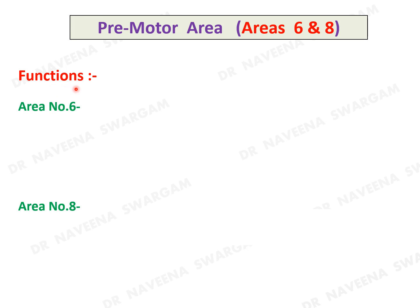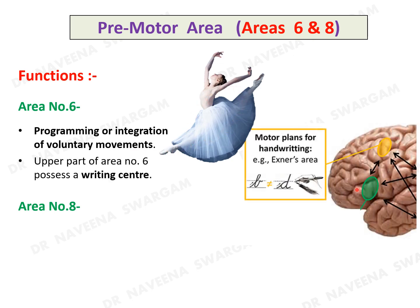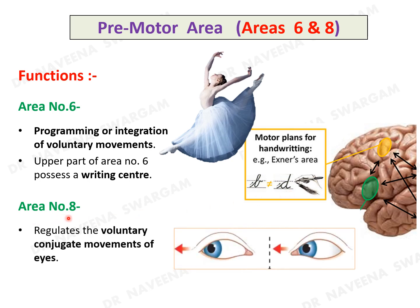Functions of the premotor area: area 6 is involved in the integration of voluntary movements to perform skillful acts. The upper part of this area has a writing center concerned with coordinated movements of writing. Area 8 regulates voluntary conjugate movements of the eyes, which is why it is also known as the frontal eye field.